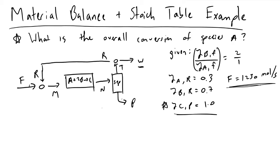The question is: how are we going to determine the overall conversion of species A given all these numbers? If you want to pause the video now and see if you can solve this on your own, I would recommend trying. If you can do it, you're very well set to do well if asked about a material balance on a midterm.